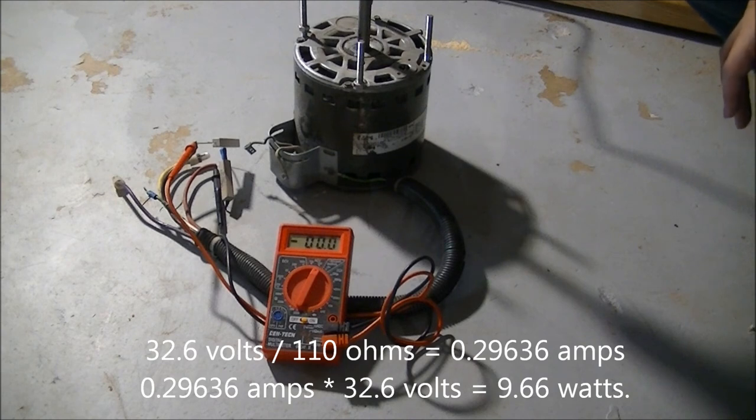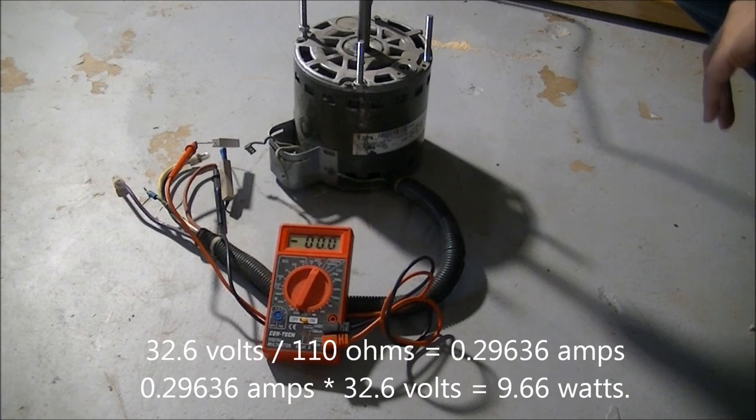About 30 volts. Max speed on that drill. Across that resistor. We can calculate what that power will be.